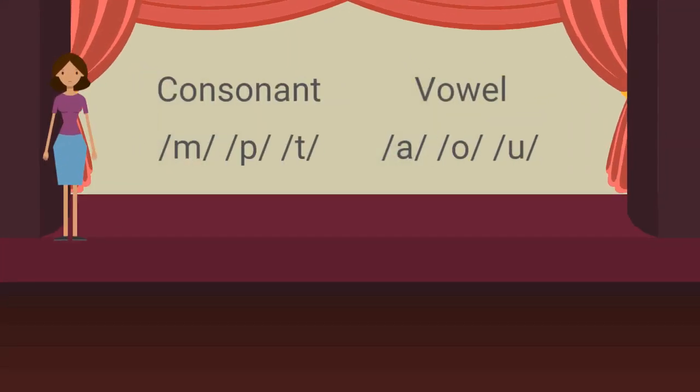Before I explain in detail, I would like to give you two words. The first one is the word consonant. Consonants are sounds like m, p, t — sounds that can be used at the beginning or at the end of a word, like the word map, the word pot, or the word trine.